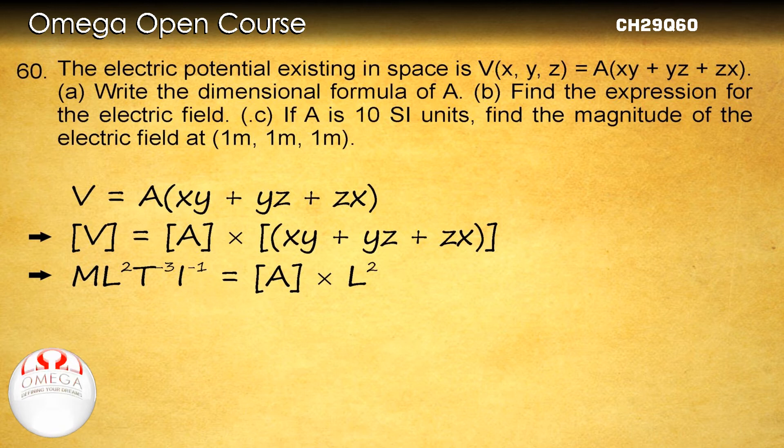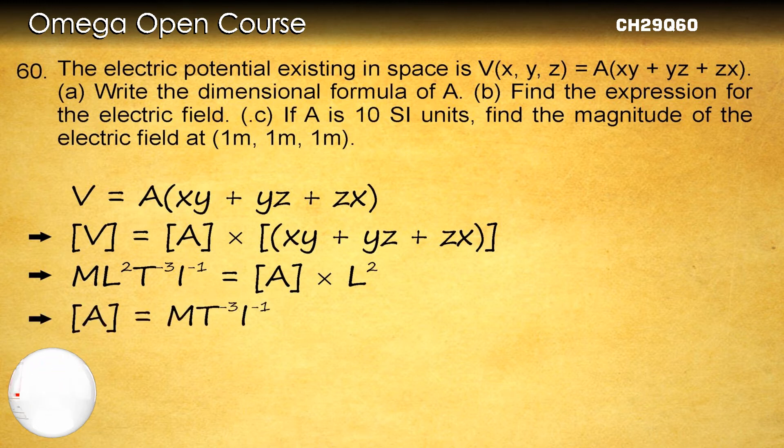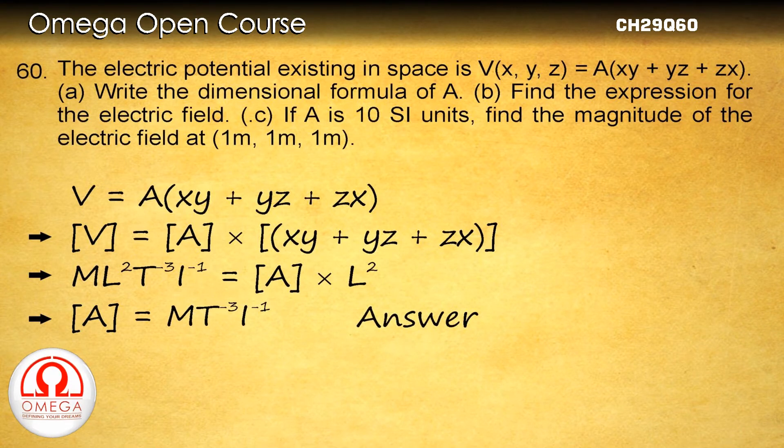Hence the dimension of xy plus yz plus zx is L². Putting these values, we get ML² T⁻³ I⁻¹ equals dimension of A times L². This implies dimension of A equals MT⁻³ I⁻¹. This is the answer to part A of the question.